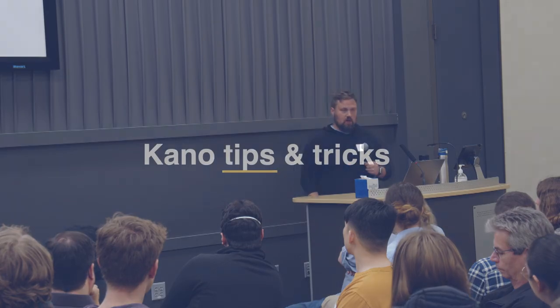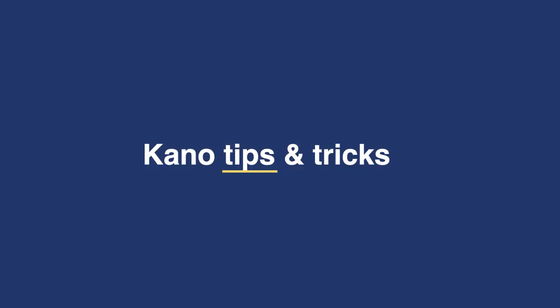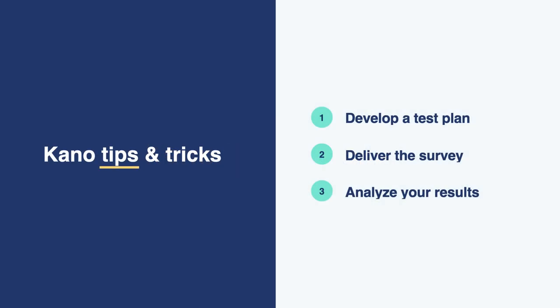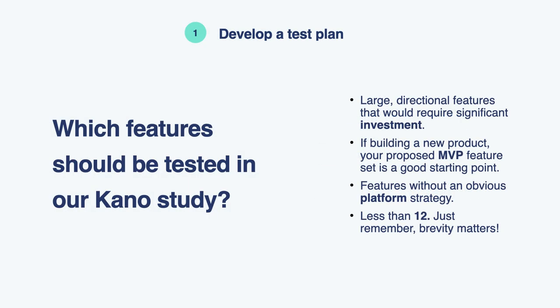We've run a bunch of these studies and picked up some tips and tricks. In the planning stage, there's a lot of thought that should go into what features you're ultimately going to test. You want a certain level of investment scale to be there — if it's just a small simple feature that can be implemented in a couple of days, skip it. What you're really trying to do is test those big direction-setting features that will require a significant investment, whether measured in financial terms or opportunity costs.